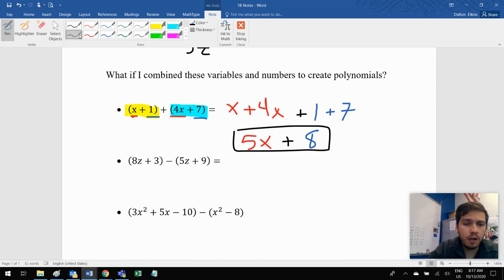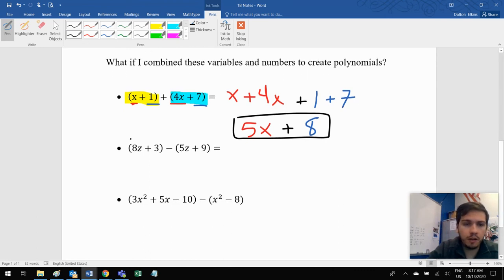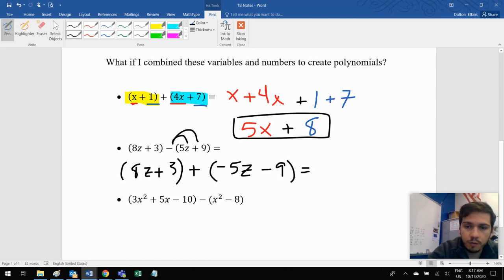Now, what about subtraction? Subtraction is actually very interesting because it's not addition. So we can't freely write everything. So instead what we're going to do is we're going to distribute the negative to both pieces here and turn it into an addition problem. So this negative is going to go to the five Z. So negative five Z. And this negative is going to go to the positive nine. So negative one times positive nine, negative nine. We switch it.